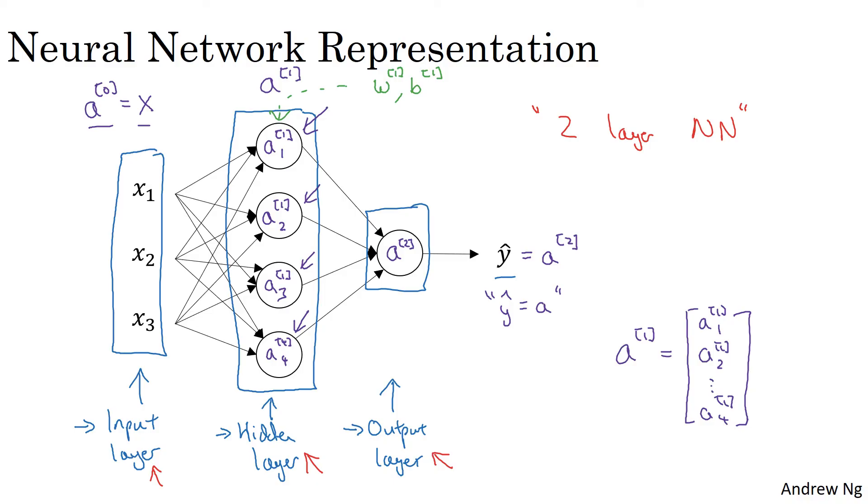We'll see later that W will be a four by three matrix, and B will be a four by one vector in this example, where the first coordinate four comes from the fact that we have four nodes or four hidden units in the layer, and three comes from the fact that we have three input features.